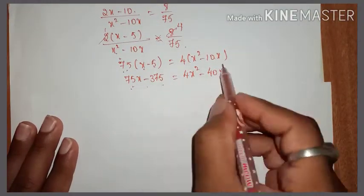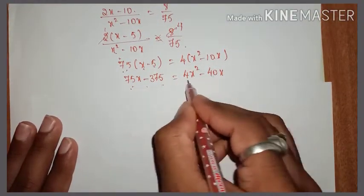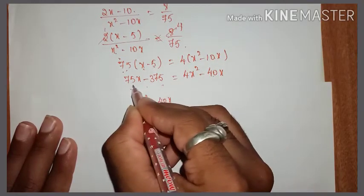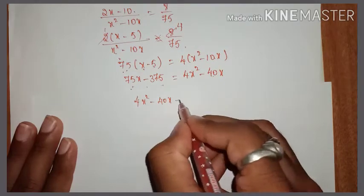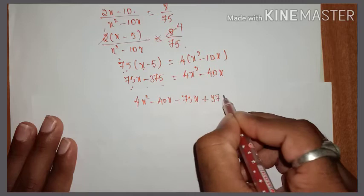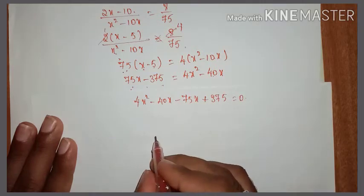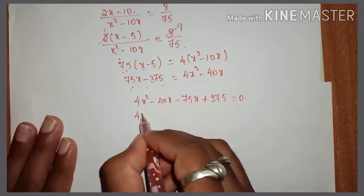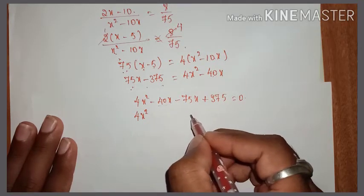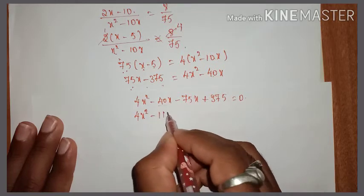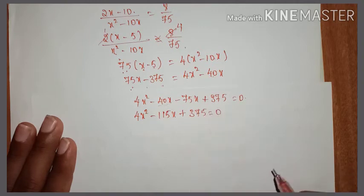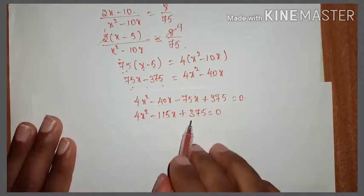Taking all terms to the right-hand side: 4x squared minus 40x minus 75x plus 375 equals 0. Combining like terms gives 4x squared minus 115x plus 375 equals 0.